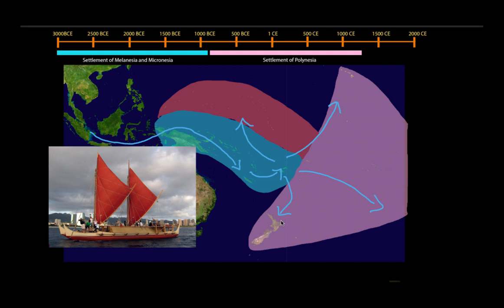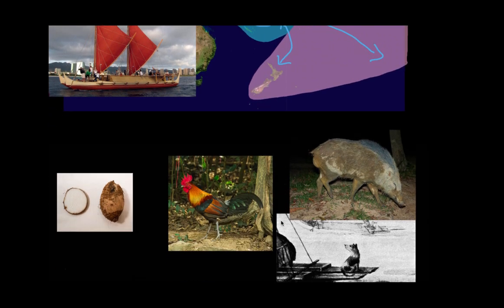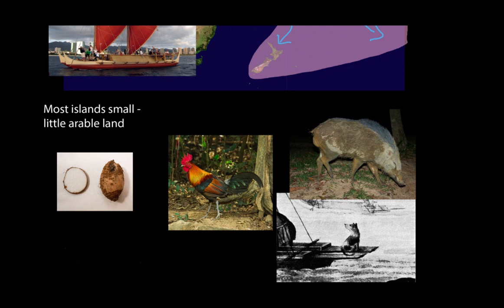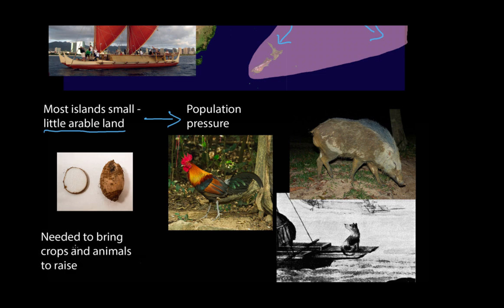The other environmental obstacle is that a lot of these islands are really small — some are quite difficult to see on a satellite image — and they don't have a lot of arable or farmable land on them. They can't support large populations. This is probably one reason why expansion continued in the Pacific over such a long period: if the island population grew to a certain point, some people had to leave.